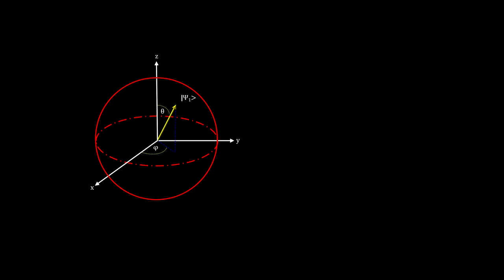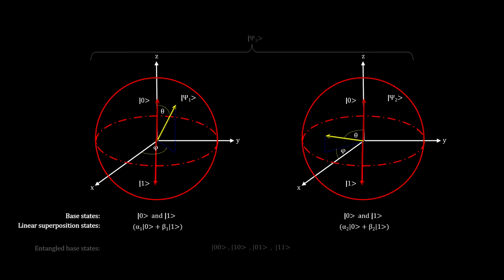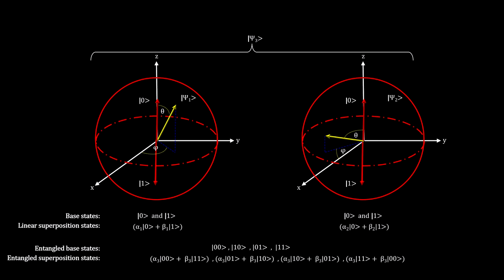With the understanding that particle-based quantum states can and do combine into linear combinations, called superposition states, we can examine how these superposition states combine when particles become entangled with each other.